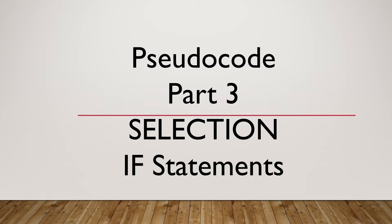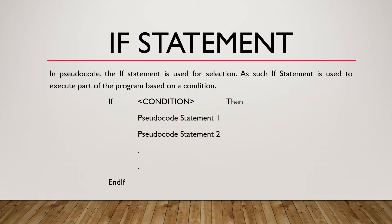In Selection, we are going to look at If Statements. In Obsidocode, the if statement is used for selection. The if statement is used to execute part of the program based on a condition. The statement below has been given to you as an example. We have the if condition, then a few pseudocode statements, and end if. We are going to break down this if statement.